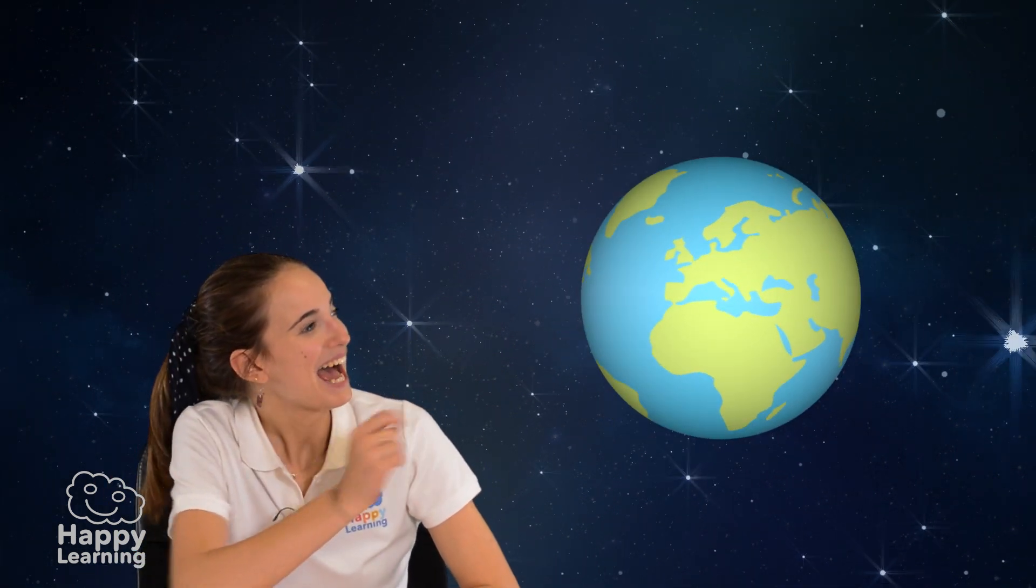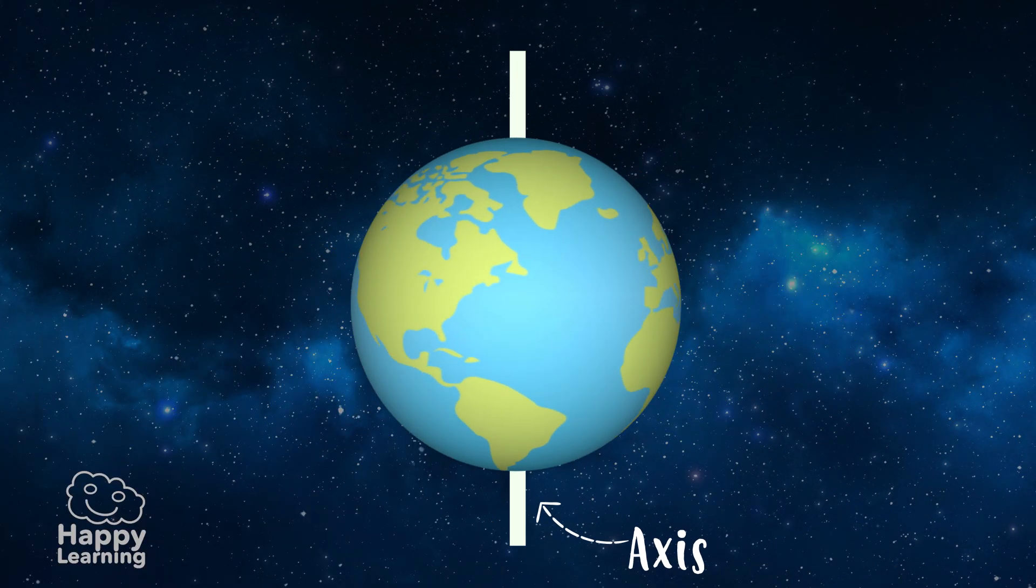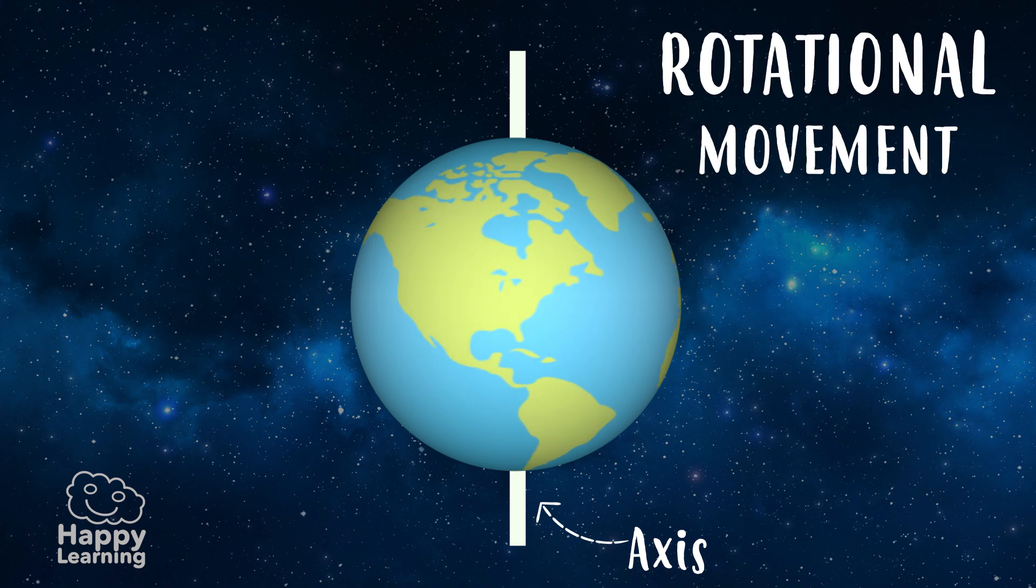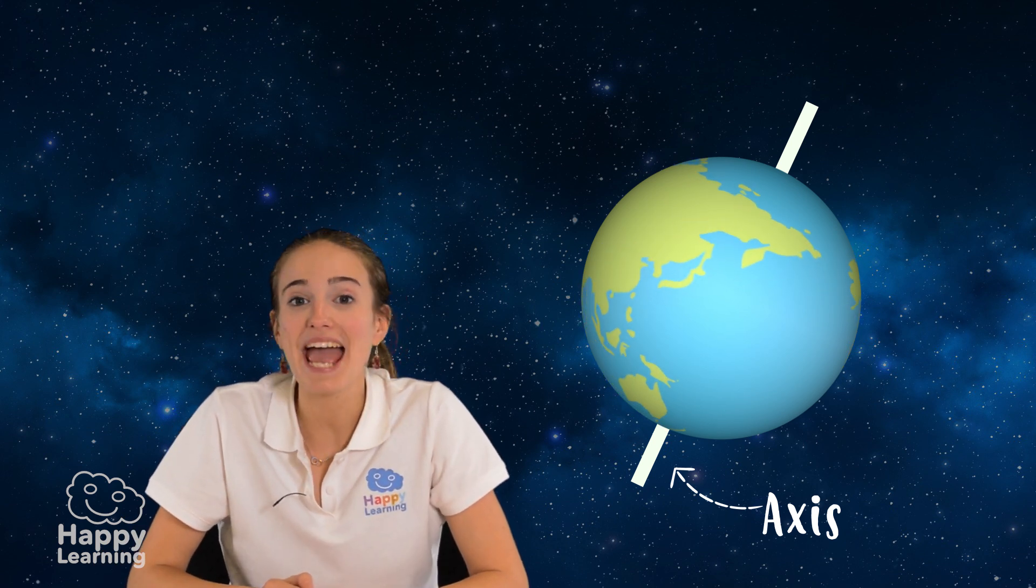Planet Earth has an axis, which is an imaginary line where the Earth spins around itself in a rotational movement. This axis isn't up straight, it's actually leaning, and depending on the month of the year there are areas that receive more heat than others.